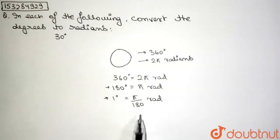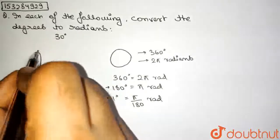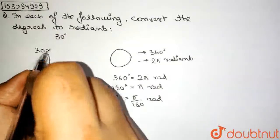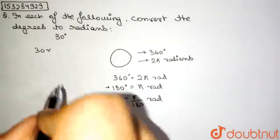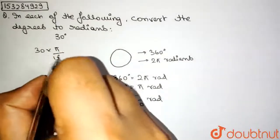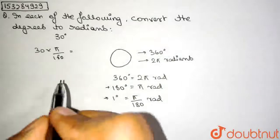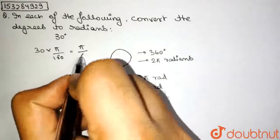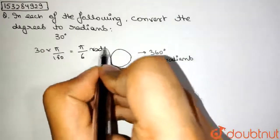So, if 1 degree is π by 180, 30 is absolutely going to be 30 multiplied by the value of 1, which is π by 180, which is nothing but equal to π by 6 radians.